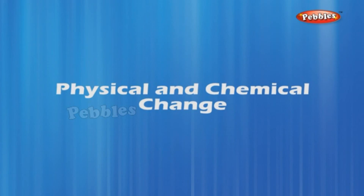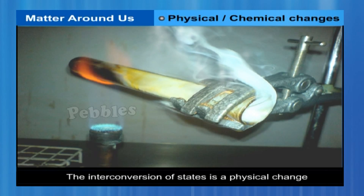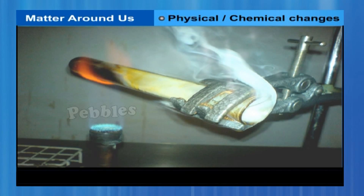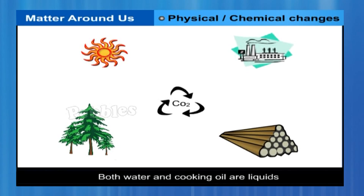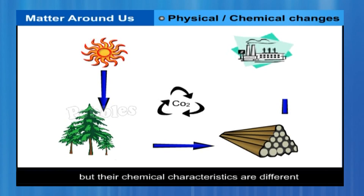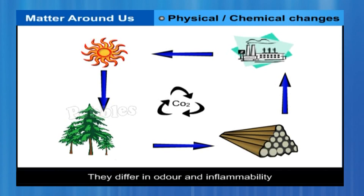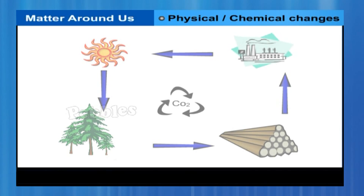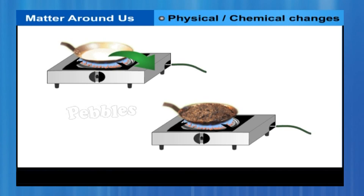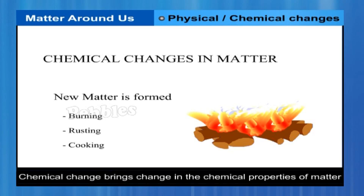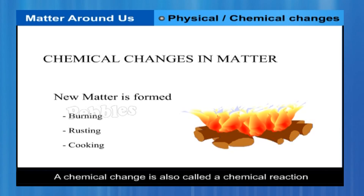The inter-conversion of states is a physical change because these changes occur without a change in composition and no change in the chemical nature of the substance. Both water and cooking oil are liquids, but their chemical characteristics are different — they differ in odor and inflammability. Oil burns in air whereas water extinguishes fire. Burning is a chemical change: one substance reacts with another to undergo a change in chemical composition. A chemical change brings a change in the chemical properties of matter and we get new substances; it is also called a chemical reaction.